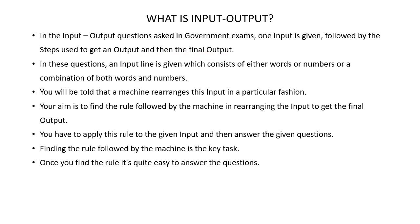In these questions, an input line is given which consists of either words or numbers or a combination of both words and numbers. You will be told that a machine rearranges this input in a particular fashion. Your aim is to find the rule followed by the machine in rearranging the input to get the final output. You have to apply this rule to the given input and then answer the given questions.